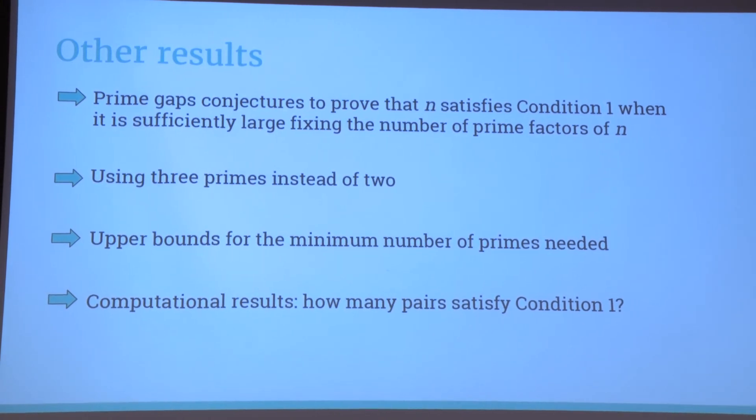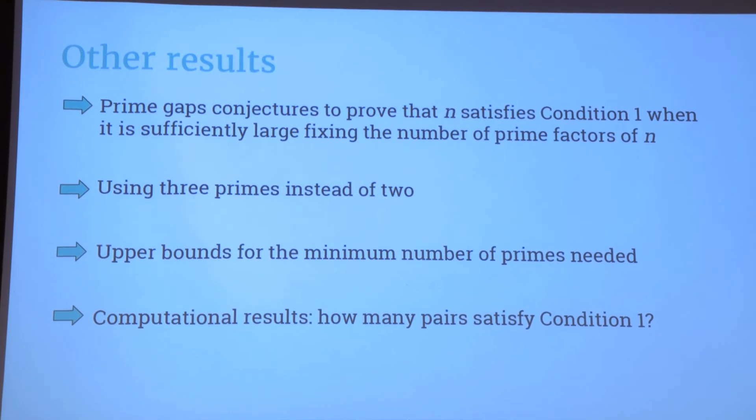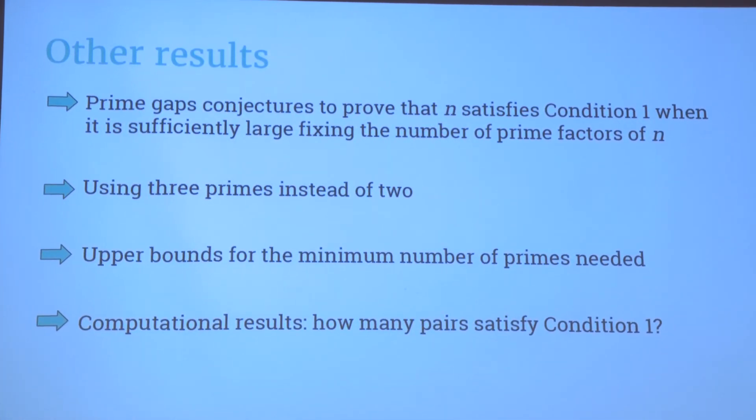If we paint with m colors, we found upper bounds on the minimum number of m, such that all integers n would satisfy this variation of condition 1. And we have four different upper bounds.